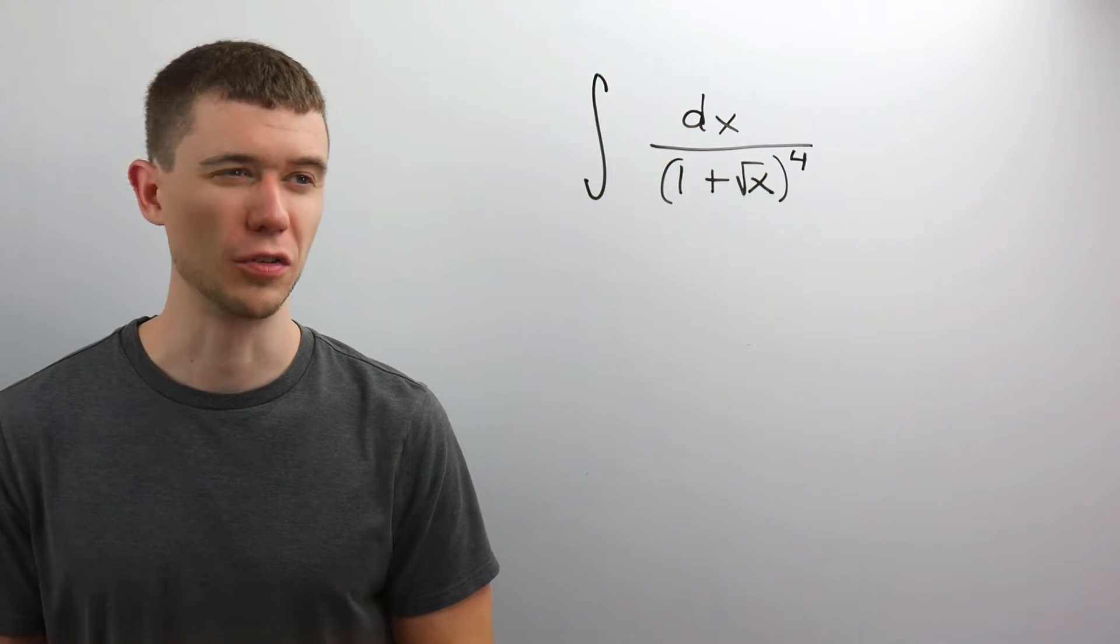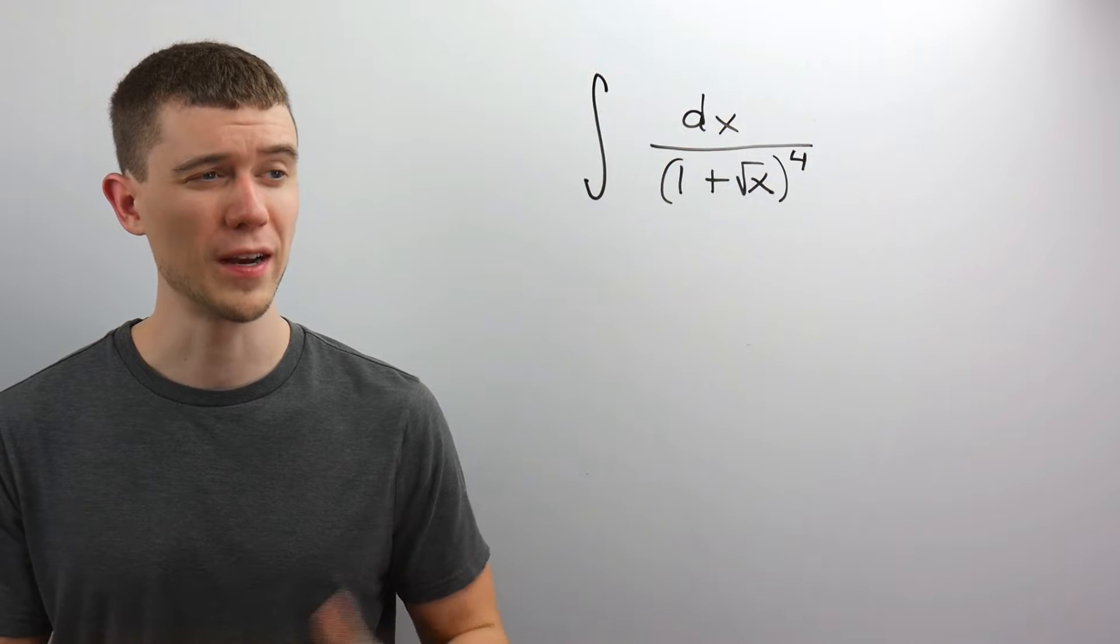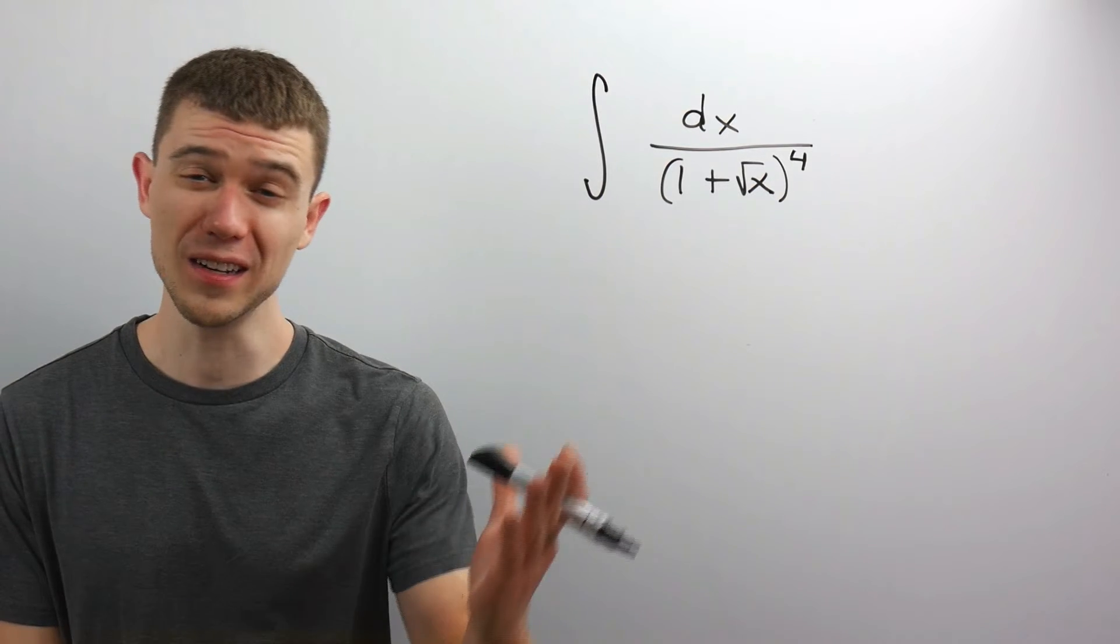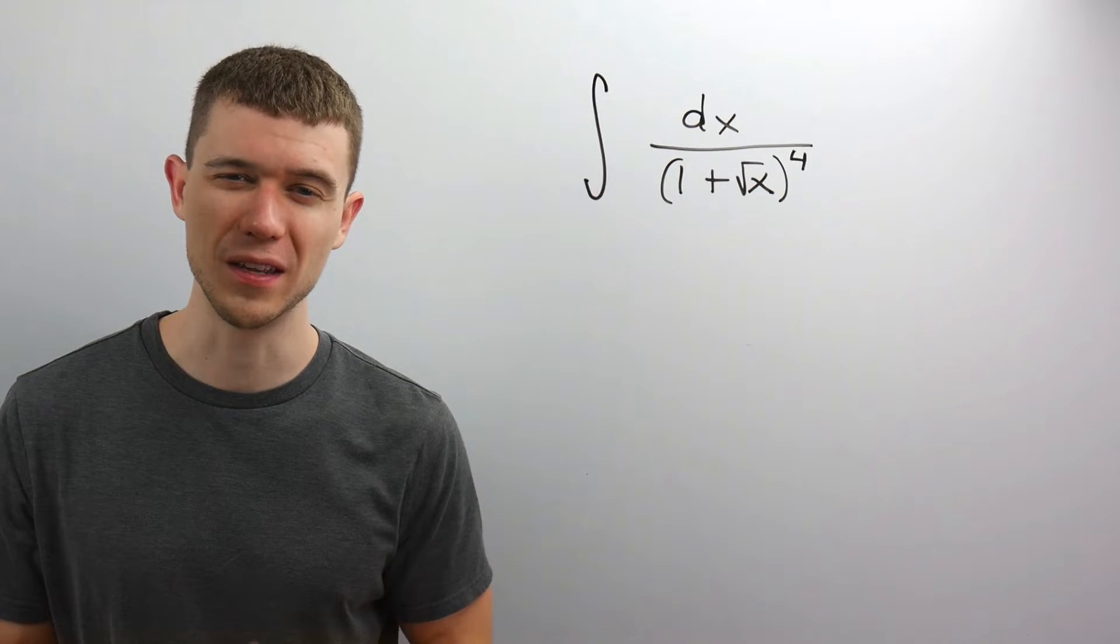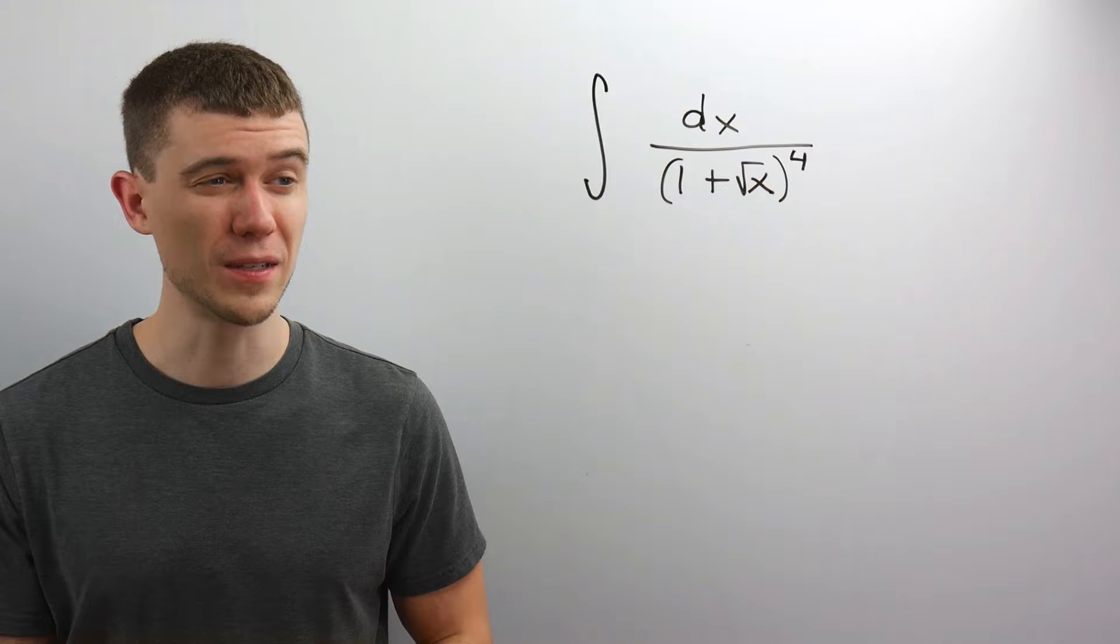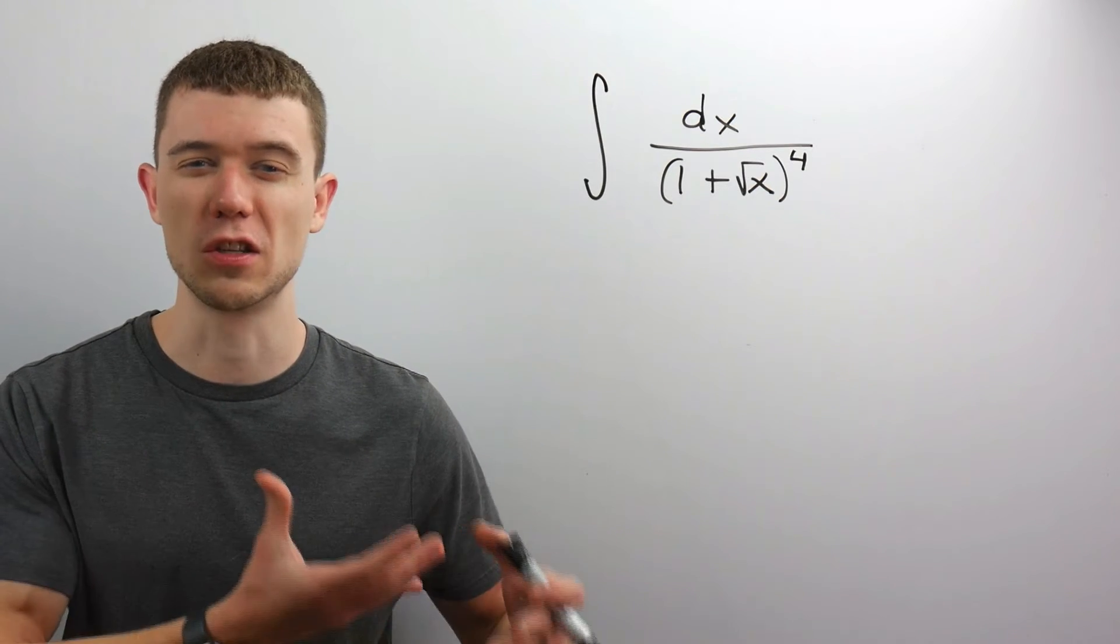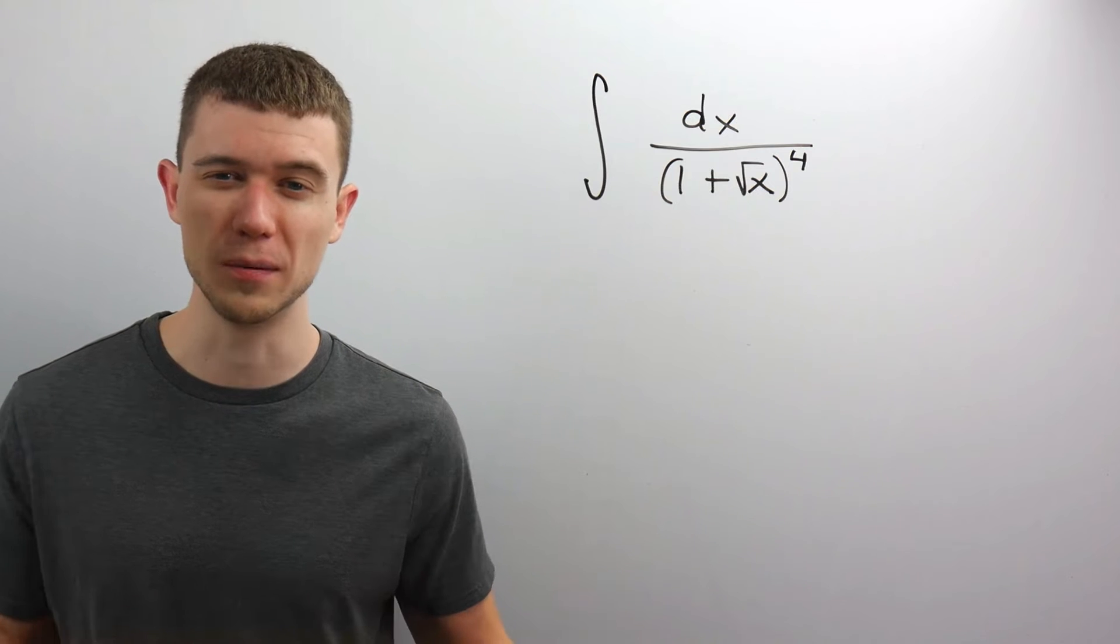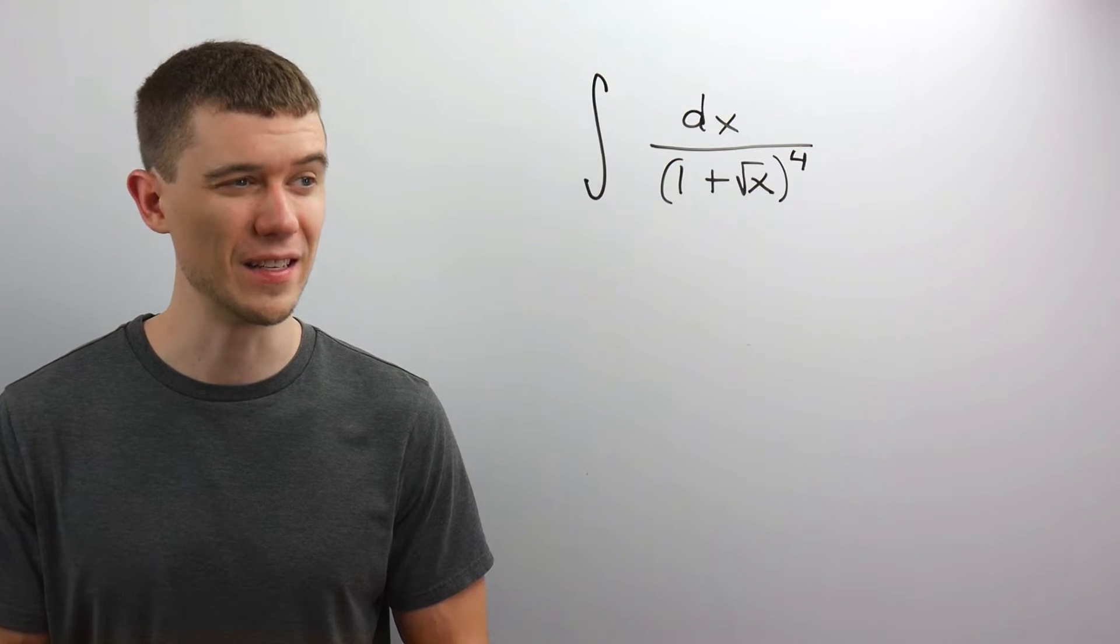We're going to solve this integral, this antiderivative dx over 1 plus root x all to the 4th. If you're not careful, this could scare you. It doesn't quite look like many of the things you're used to, and you might be tempted to use a u-substitution, and you'd find very quickly that it doesn't match the normal flow for a u-substitution. There's nothing to cancel out once you take the du.